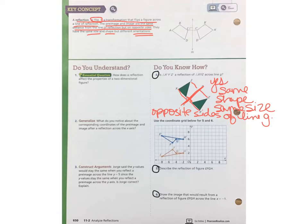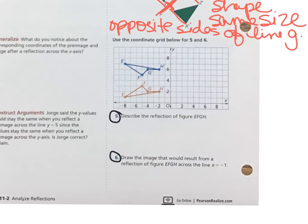Now let's take a look at the coordinate grid for questions five and six. Number five, describe the reflection of figure EFGH.